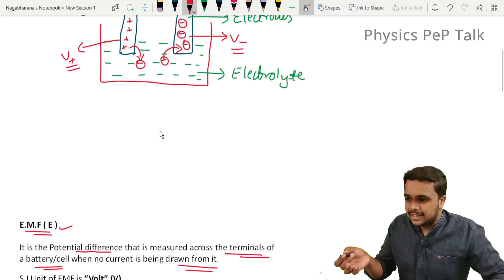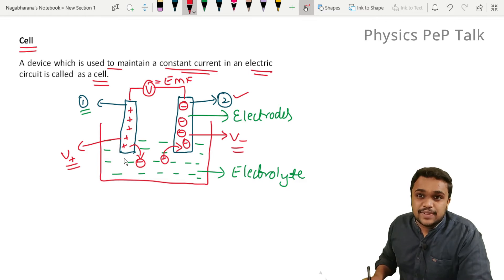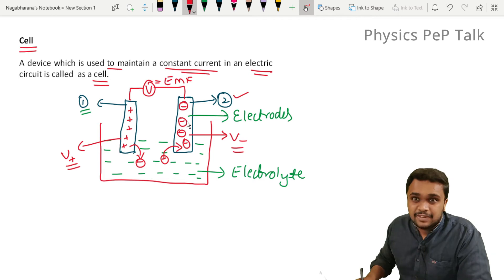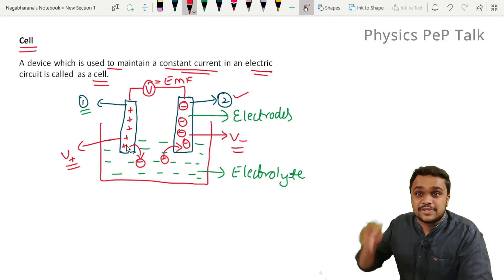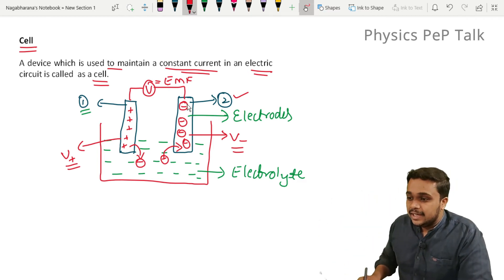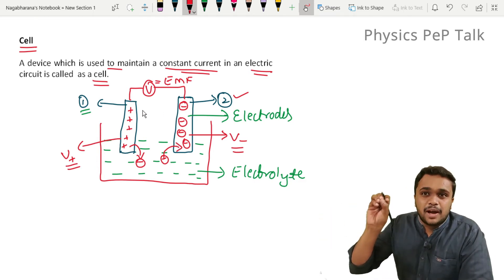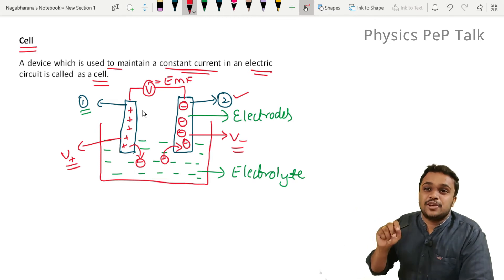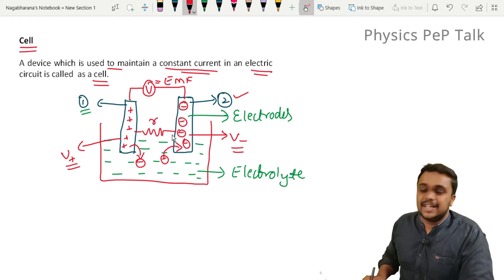I am going to explain how internal resistance works. This electrode is charged and has to transfer electrons. There will be a resistance for the flow of electrons within the electrolyte. There will be some fixed ions or fixed molecules, and due to drift velocity there will be a formation of resistance. That resistance formed within the cell is called the internal resistance of the cell, denoted by small r.